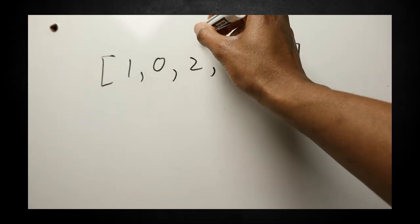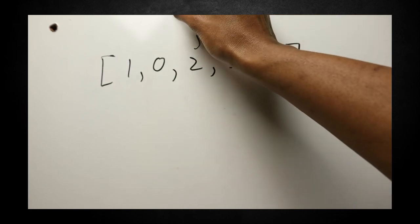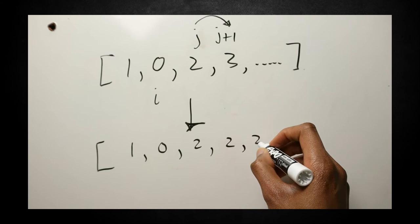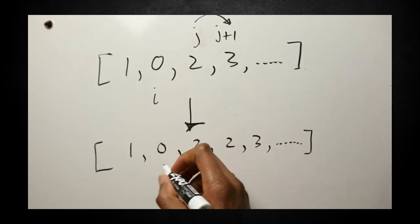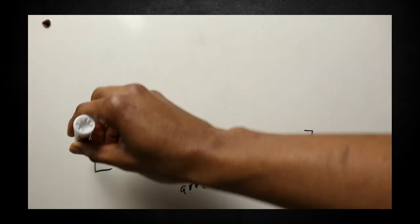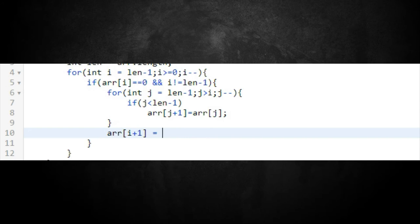As we go backwards, we visit j and copy its value one position to the right. After shifting all values to the right using the j loop, we're back in the i loop and we insert a zero right after the found zero: array[i + 1] = 0.